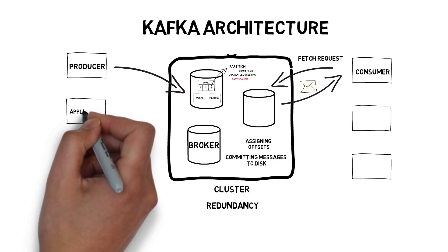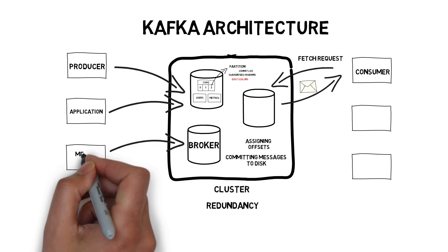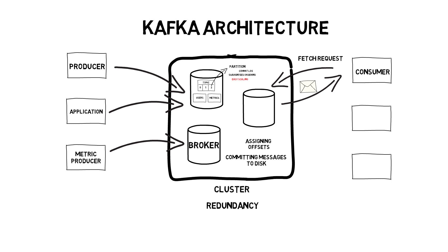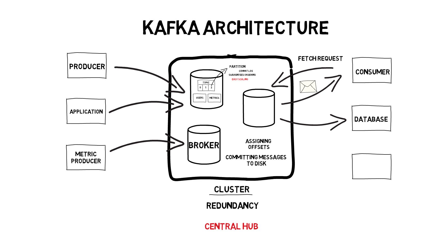Producers are usually other applications producing data — for example, an application producing metrics and sending them to a Kafka cluster. Similarly, consumers are usually other applications consuming data from Kafka. Kafka very often acts like a central hub for all the events in the system, which makes it a perfect place to connect to if you are interested in a particular type of data. A good example would be a database that can consume and persist messages, or an Elasticsearch cluster that can consume certain events and provide full-text search capabilities for other applications.